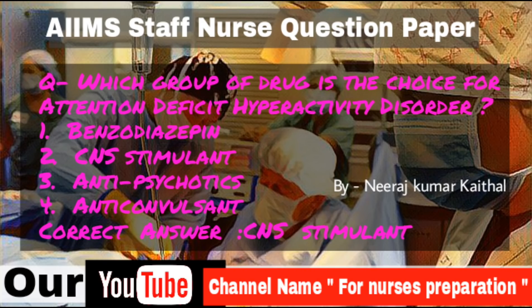Question: Which group of drugs is the choice for Attention Deficit Hyperactivity Disorder (ADHD)? Options: Benzodiazepine, CNS stimulant, Antipsychotics, Anticonvulsant. ADHD is a mental disorder of neurodevelopmental type characterized by problems paying attention, excessive activity, or difficulty controlling behaviour not appropriate for a person's age. Treatment includes counselling, lifestyle changes, and medication. Diagnosis is based on symptoms after other possible causes are ruled out.